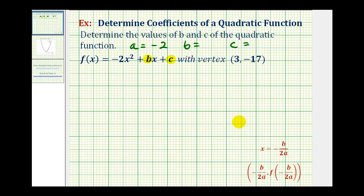So if we start with the equation of the axis of symmetry, which also gives us the x coordinate of the vertex. Because the x coordinate of our vertex is three, this x must equal three and this must equal negative b divided by two times a, and we know a is negative two.